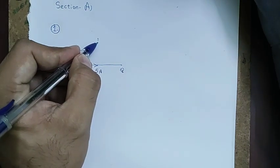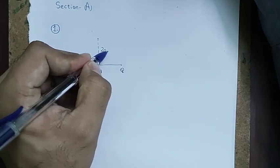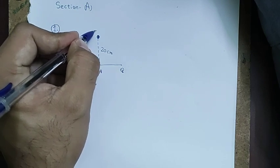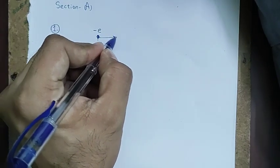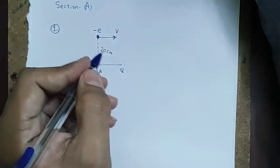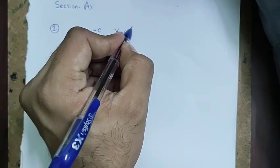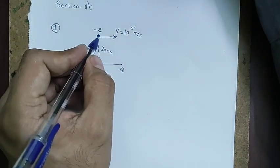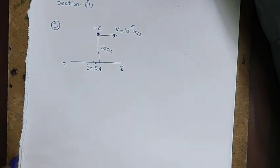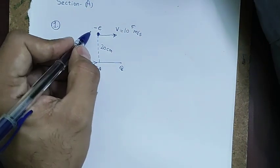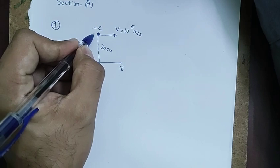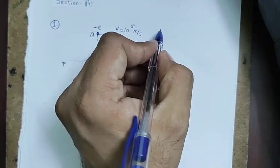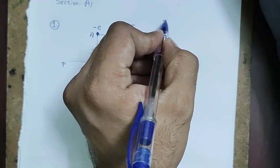From this wire at a distance of 20 centimeters, one electron is present — charge minus e. This electron is moving with a velocity v equal to 10^5 meters per second. We have to find the force acting on this electron. First, let's calculate the magnetic field at point A, the position of the electron.